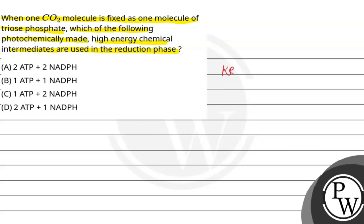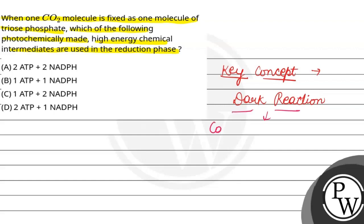So the key concept is the dark reaction, जिसे Calvin cycle भी कहते हैं। यह light-independent reaction है, क्योंकि यह light पर depend नहीं करती — यह depend करती है light reaction के products पर, that is ATP and NADPH.